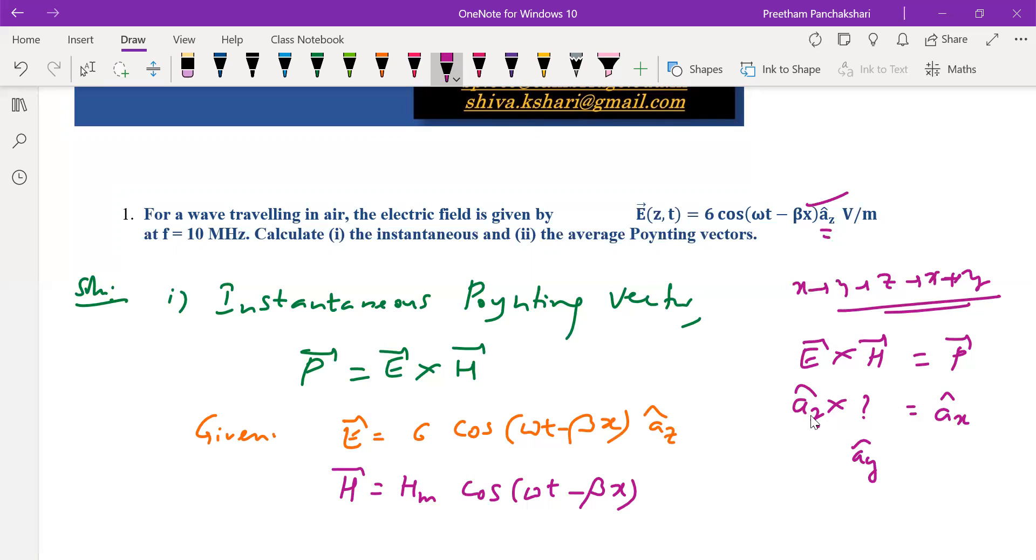If you follow the sequence, z is there. After z, x should come here. But only x is here, so it is going to be y. It is going to be minus y here.